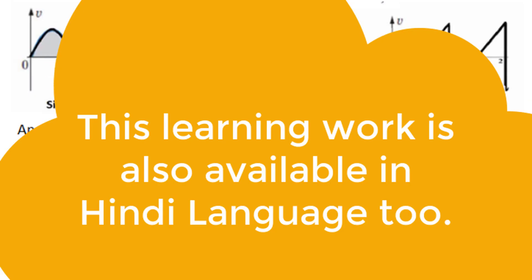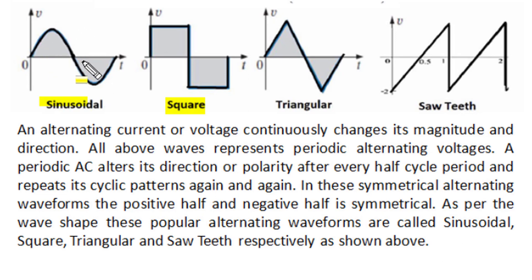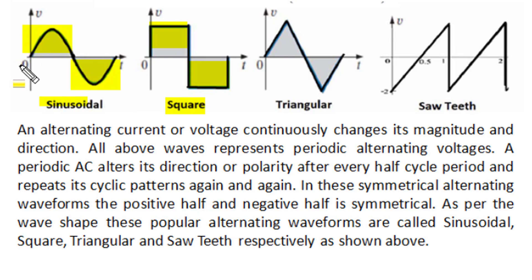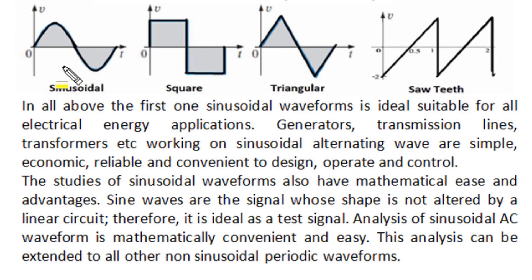In symmetrical alternating signals, whether sinusoidal, square, triangular, or sawtooth waves, the alternating current or voltage changes not only its magnitude but also its direction. All these waves represent periodic positive and negative half cycle repetitions after a pre-specified time interval. The positive and negative half cycles are symmetrical, and the full cycle average value comes out as zero.